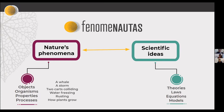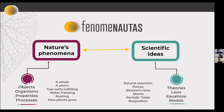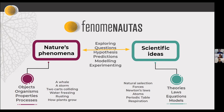A whale storm, two parts colliding, water freezing, rusting, or how plants grow — these are examples of phenomena that scientists study and that students encounter in their educational careers. Science produces ideas to explain or predict these phenomena. That's how we come to natural selection, forces in Newton's law, or the idea of atoms — all theoretical constructs that allow us to understand nature. The key is in how to navigate from one to the other, and scientists do that by exploring questions, making hypotheses, predictions, modeling, and so on.